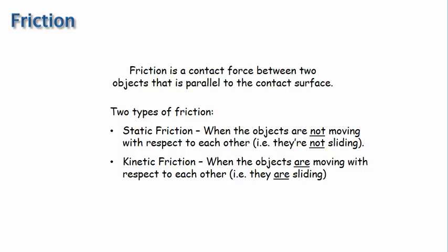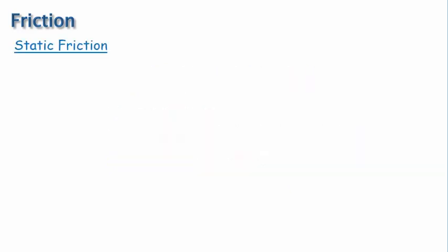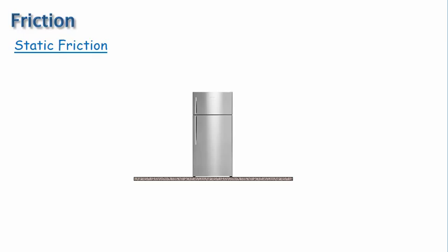And kinetic friction, when the objects are moving with respect to each other — in other words, they are sliding. Let's discuss static friction first. To understand the general behavior of static friction, let's consider a refrigerator standing on a horizontal floor. Let's draw a force diagram for the refrigerator. Here are the gravitational force and the normal force, and right now there are no horizontal forces at all, including friction.